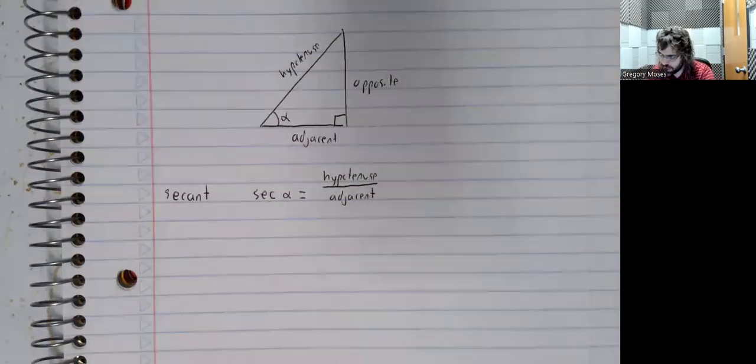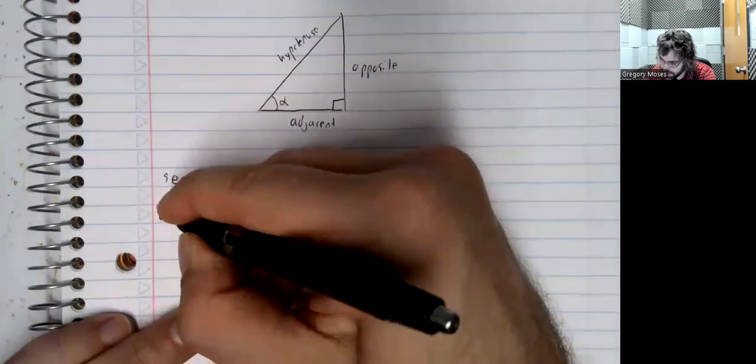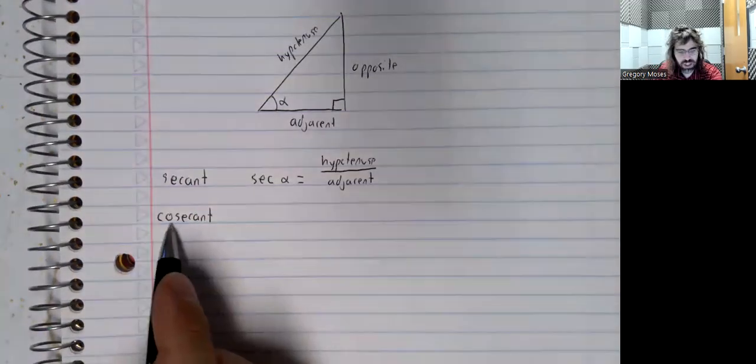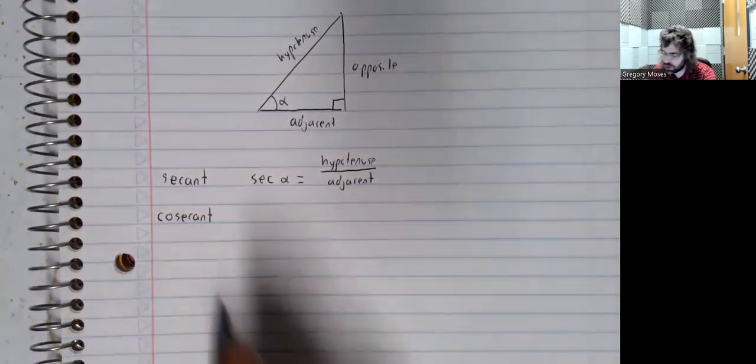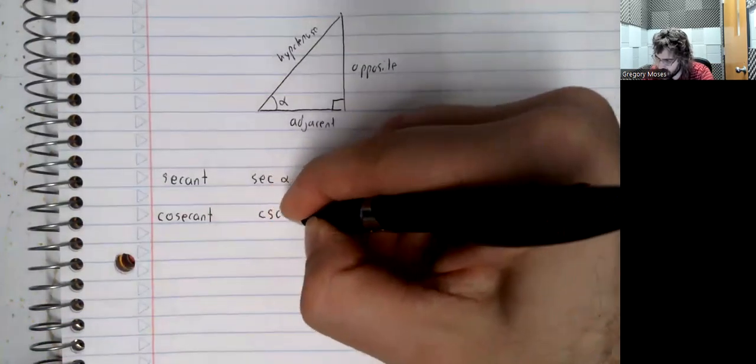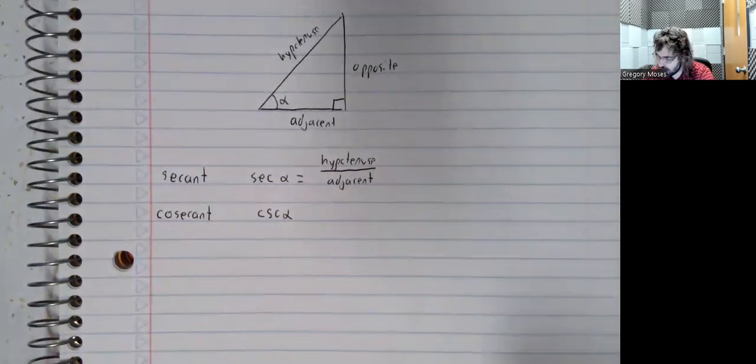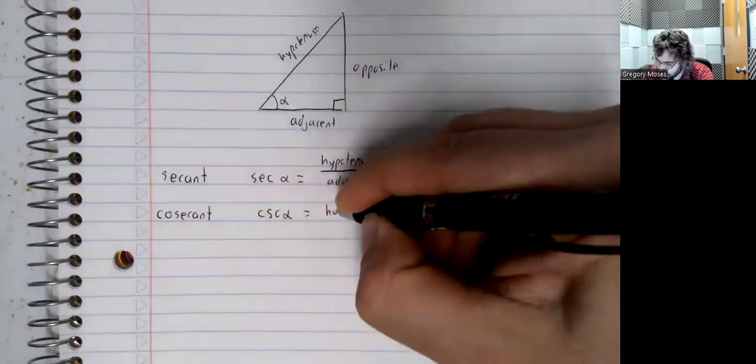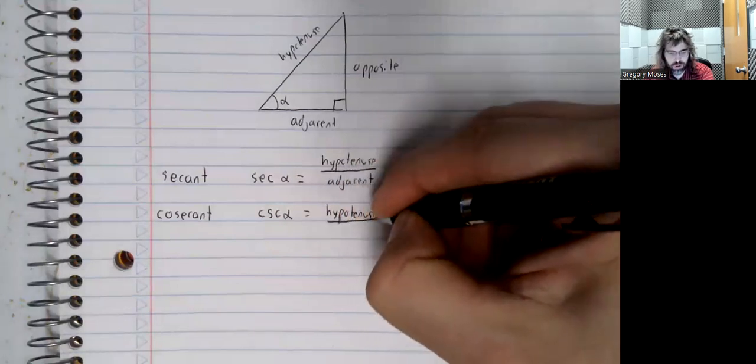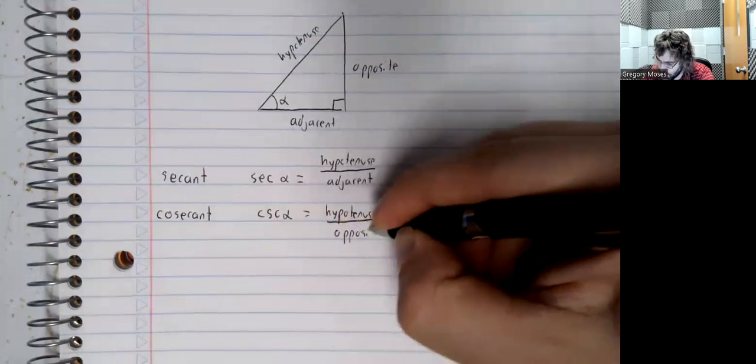And then we have the cosecant. And because cos has already been used for the cosine, this is abbreviated csc. And the cosecant is the hypotenuse over the opposite.